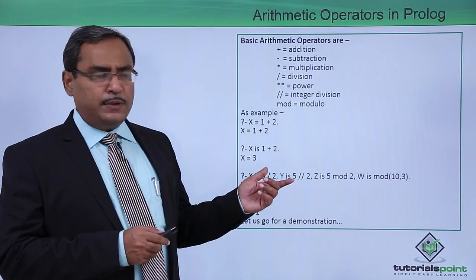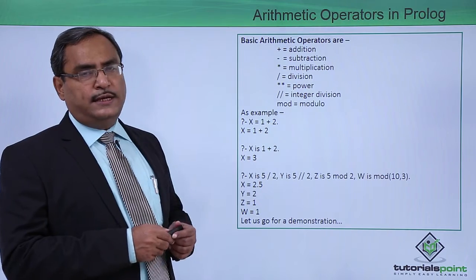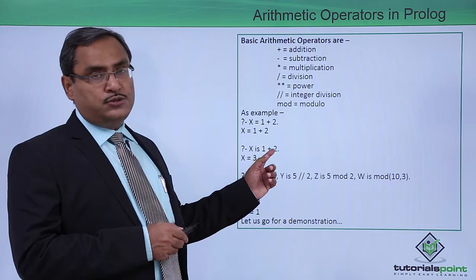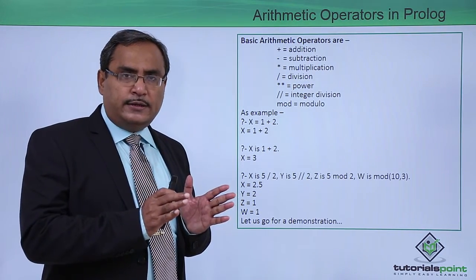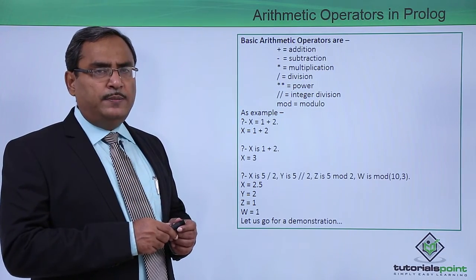Let us go for some examples. If we write x is equal to 1 plus 2, it will give you x is equal to 1 plus 2. But if we write in Prolog that x is 1 plus 2, it will give you the value 3. That means 1 and 2 will get added and then 3 will be obtained and that value will be kept in the variable x.